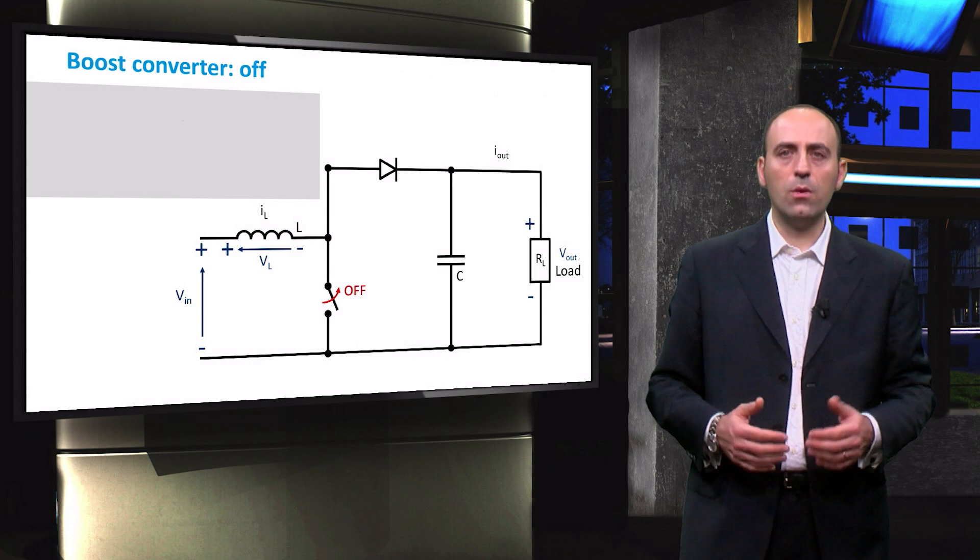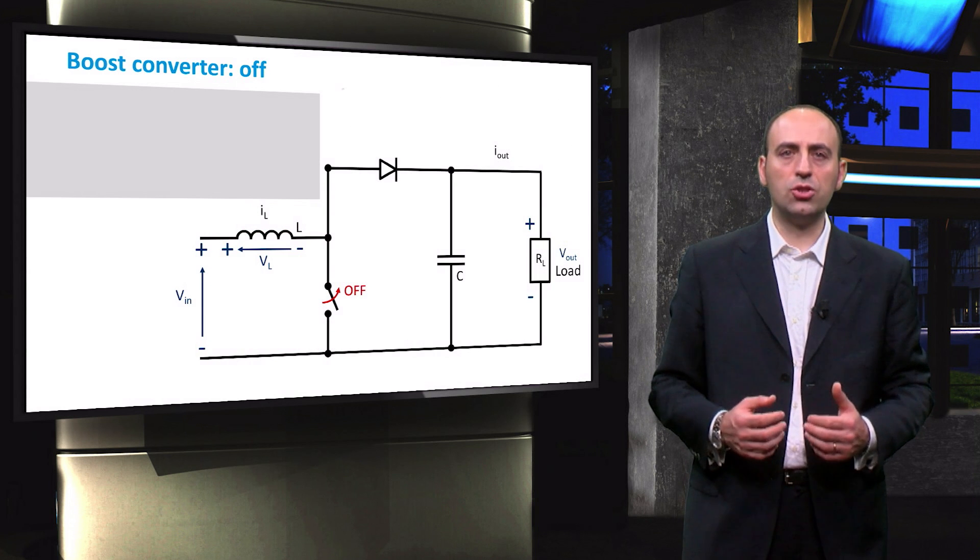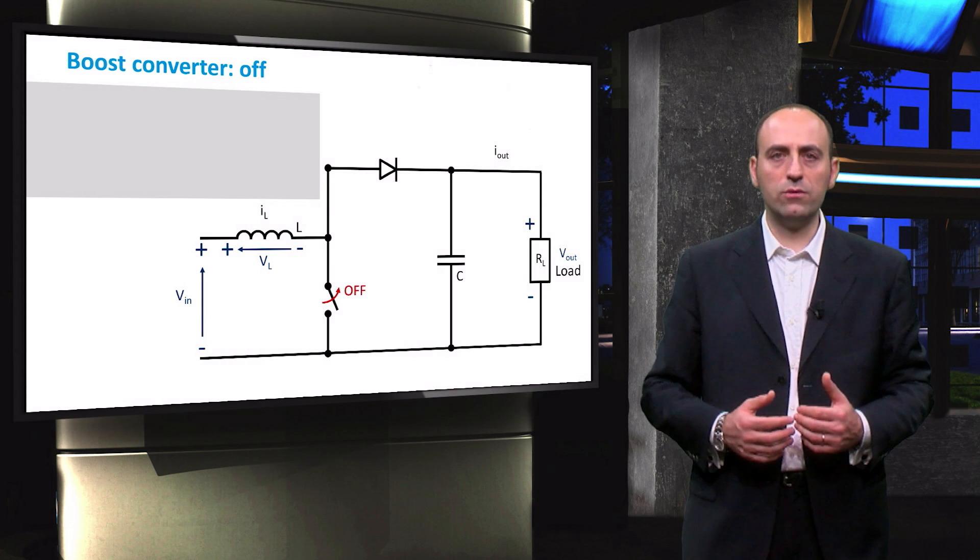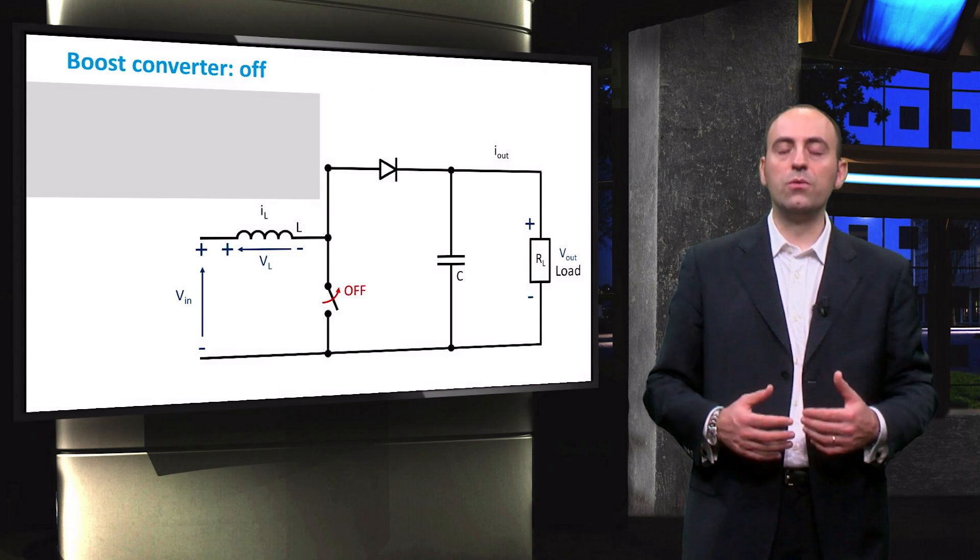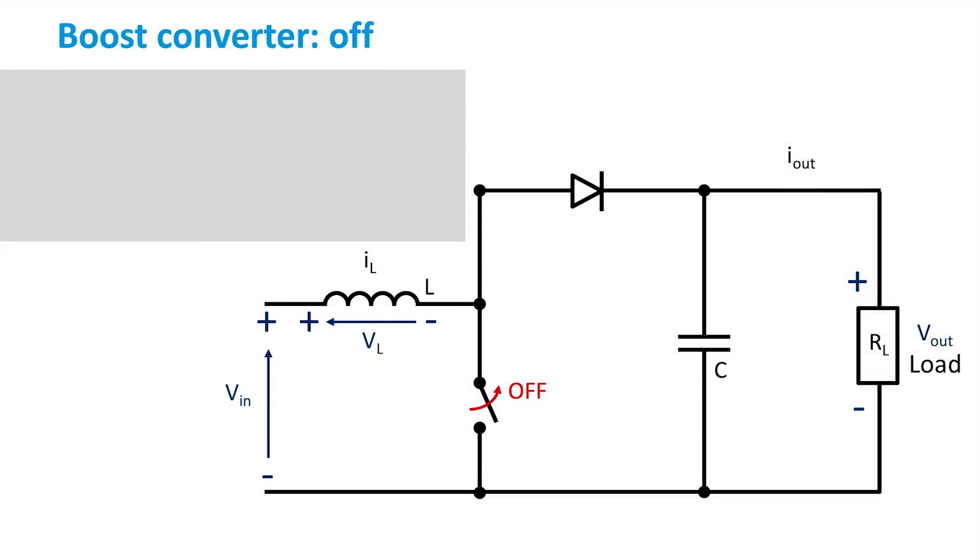On the other hand, during the OFF period when the switch disconnects the branch joining the coil to the negative pole, the energy stored in the inductor as magnetic field adds to the input voltage, and together they drive the current towards the resistive load. The voltage across the inductor is obtained by balancing the voltages in this network, and equals the input voltage minus the output voltage plus the voltage across the flyback diode.